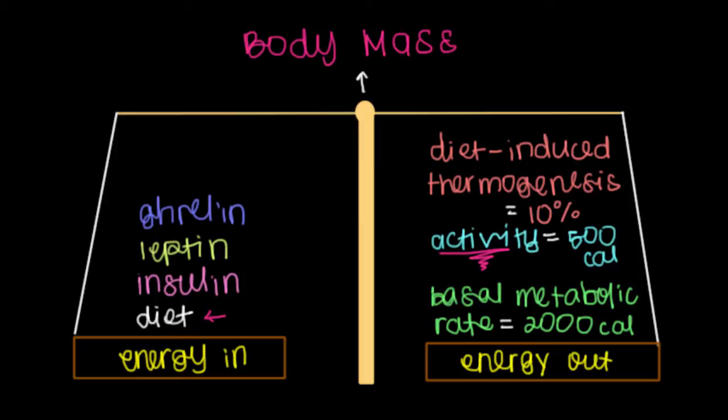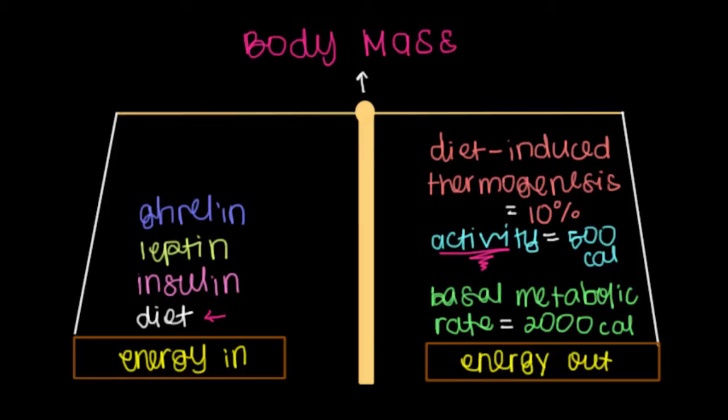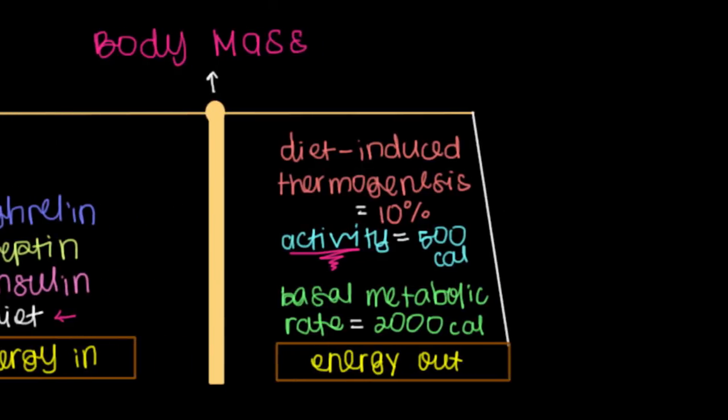But one of the things I want to highlight is the effect that hormones can have on this process, on determining whether we have a high body mass or a low body mass. And the best example of this is a mouse experiment.